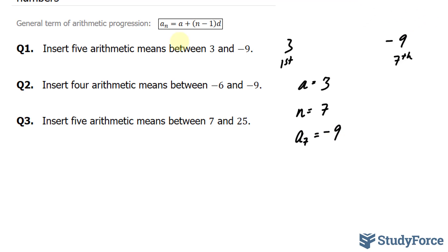What we can do is substitute these values into here. Let's go ahead and do that. a subscript n will be replaced with negative 9, a will be replaced with 3 plus 7 minus 1 times d. Next, what we will do is simplify this, where we have negative 9 equals 3 plus 6d.